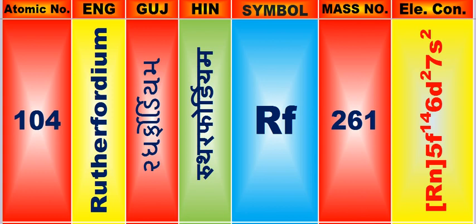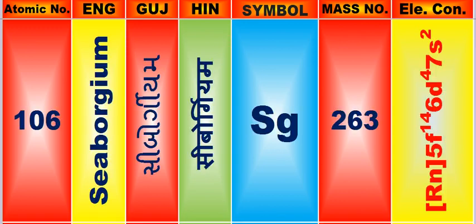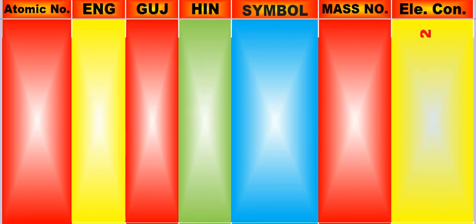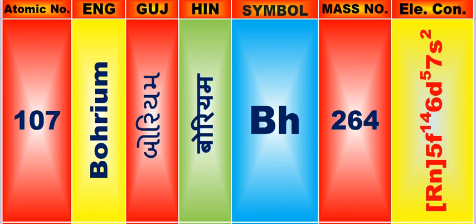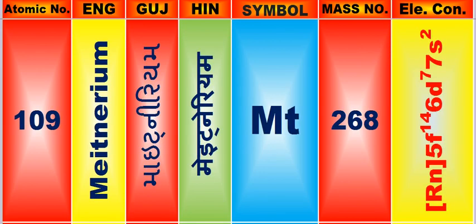Atomic number is 104, name of atom is Rutherfordium. Atomic number is 105, name of atom is Dubnium. Atomic number is 106, name of atom is Seaborgium. Atomic number is 107, name of atom is Bohrium. Atomic number is 108, name of atom is Hassium. Atomic number is 109, name of atom is Meitnerium.